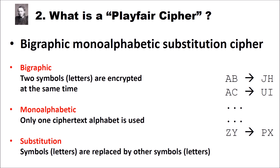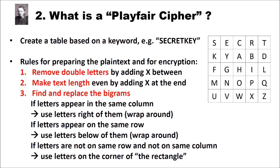Substitution simply means that symbols or letters are replaced by other symbols or letters. To create a Playfair cipher, the first step is to create a 5x5 table based on a keyword, for example 'secret key'. Since the table only holds 25 letters, the letter J has to be replaced by I. We fill in the keyword, omitting any repeated letters, then add the remaining letters of the alphabet until the table is complete.